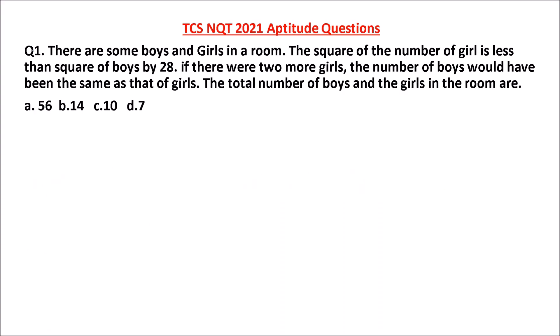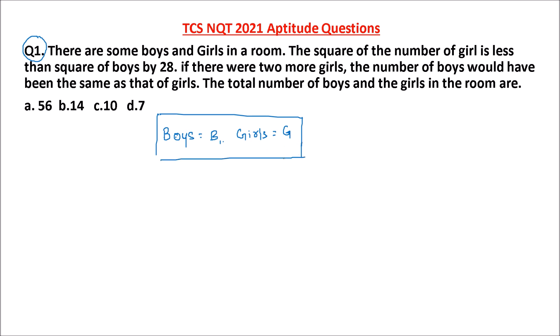Let us start with question number 1. There are some boys and some girls in a room. We will represent boys with B and girls with G. This question is a very good one — you might feel it is only a 3-line question, but it gives you a concept, and similar concept questions are getting asked in the TCS examination. Do not go for very long questions; whatever is required, that's what we study for our examination.